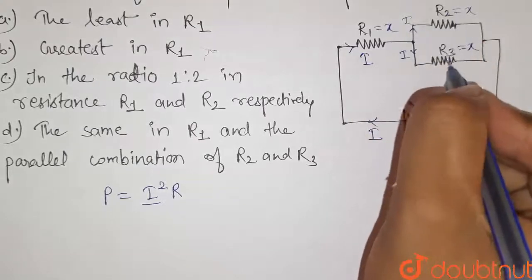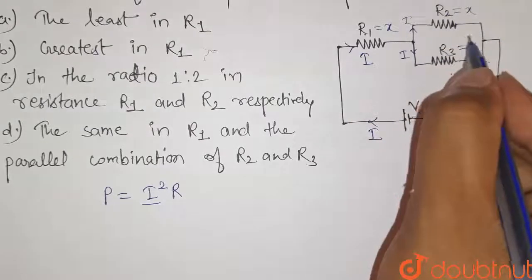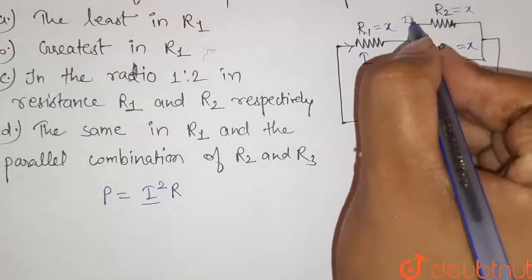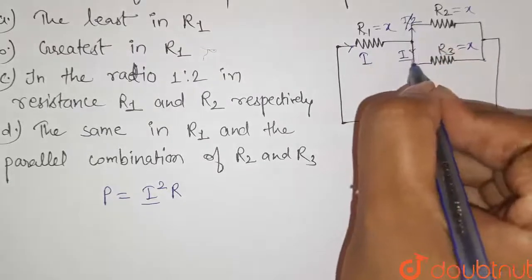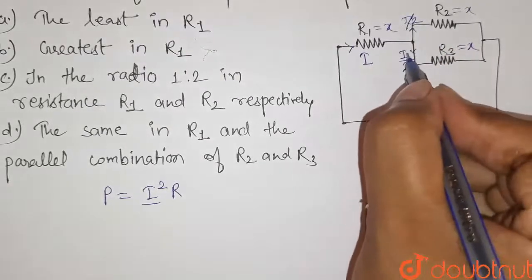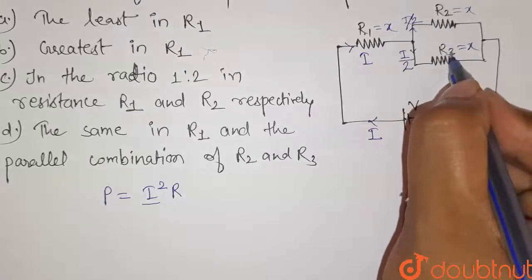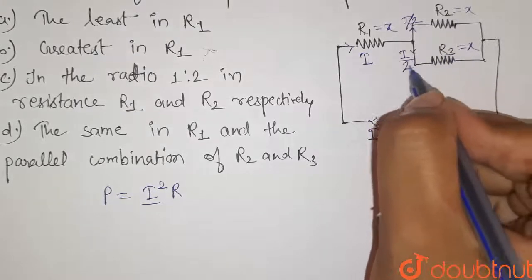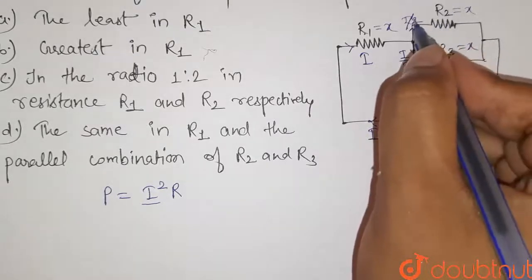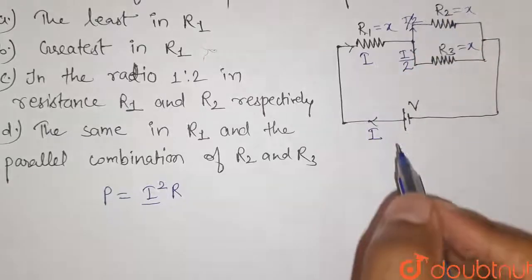Now if these two resistances are equal, which is given in the equation, so this current will equally divide into two paths and this current will be I by 2 and I by 2. So the current flowing through resistor R3 is I by 2, and it is also I by 2 for R2.